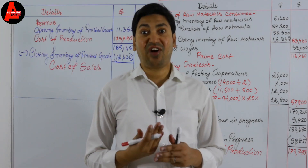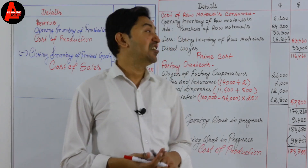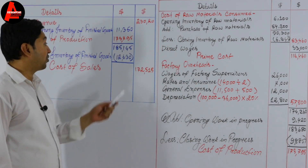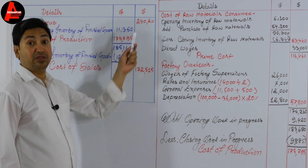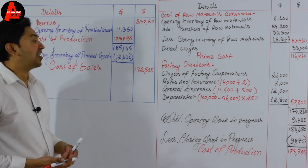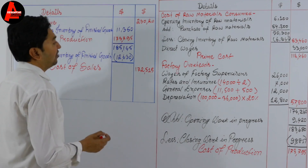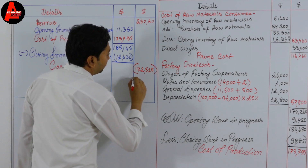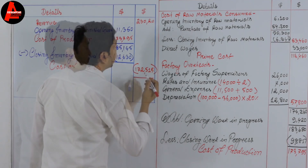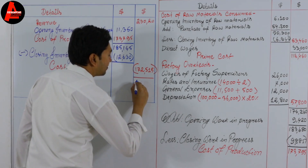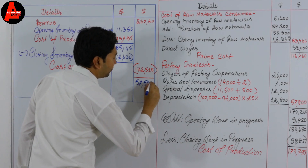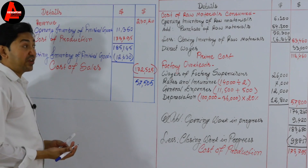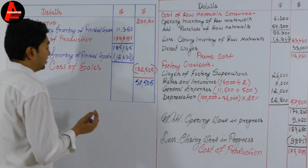We calculated cost of sales. Gross profit equals revenue minus cost of sales. We have revenue and we have cost of sales, so we subtract the cost of sales from revenue. If we subtract, we get 57,505 dollars — this is the gross profit of this manufacturing business.